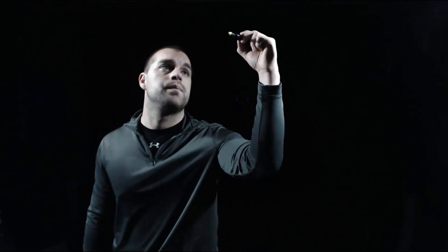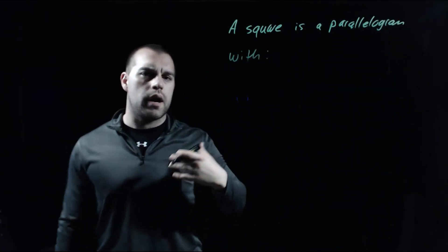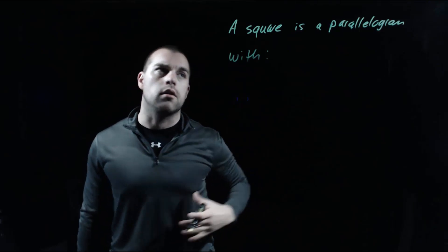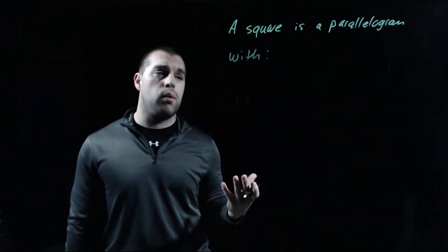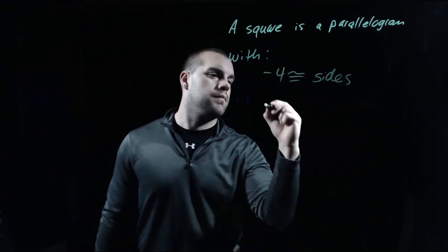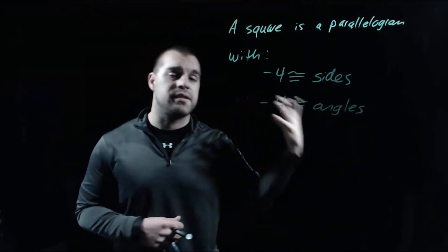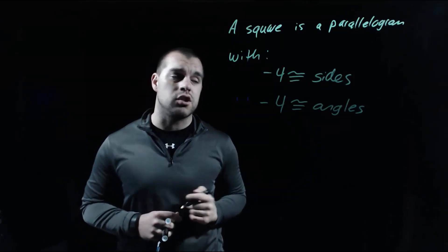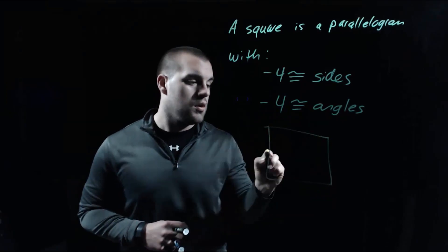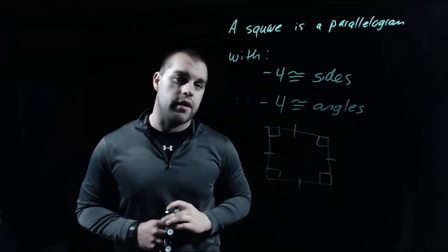Our last shape is a square, and again a square is a special kind of parallelogram. A square combines ideas from a rhombus and a rectangle: a rhombus had all four congruent sides, a rectangle had all four congruent angles — a square has both of those things. Since a square has both of those properties, it's also going to have all of the additional extra properties that went along with each shape. So we've got four congruent sides and four right angles within our shape.